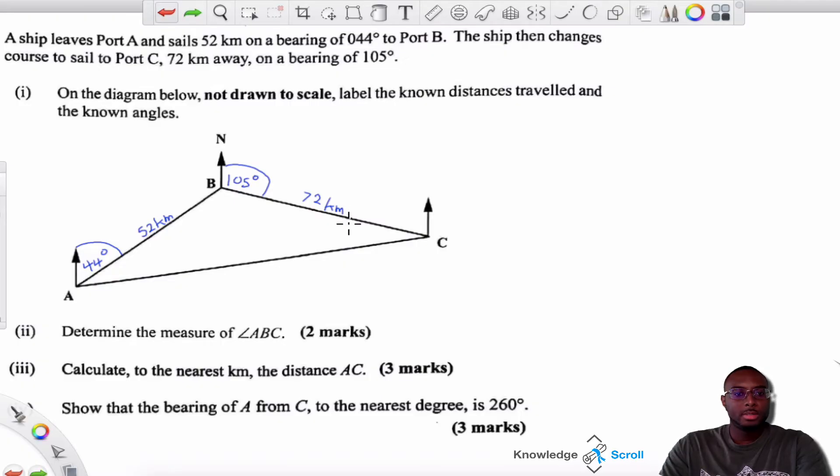So once you've labeled correctly, you should get some marks. Now, the next question is asking us to figure out this angle here. I'll put it in red so you guys can see the angle ABC. And I can't find this angle by just sight, I must do some prior working to work out this angle.